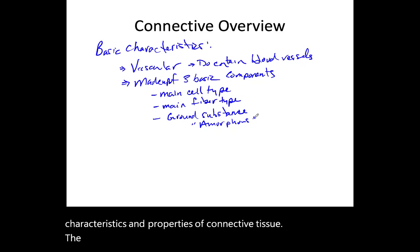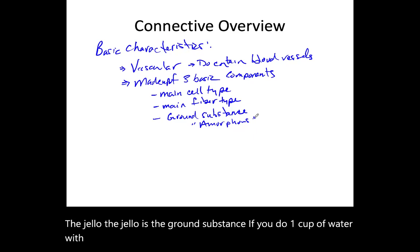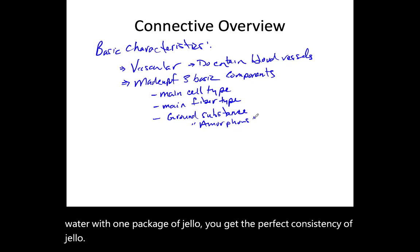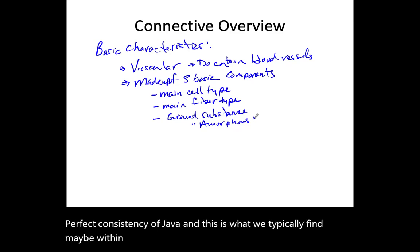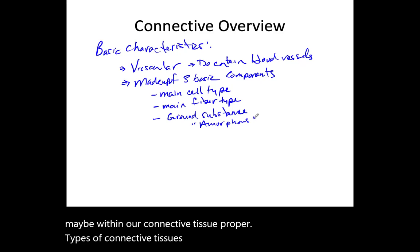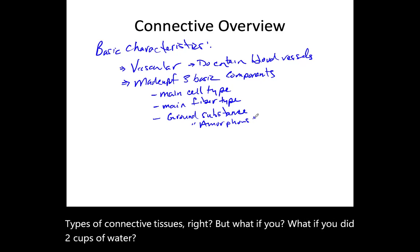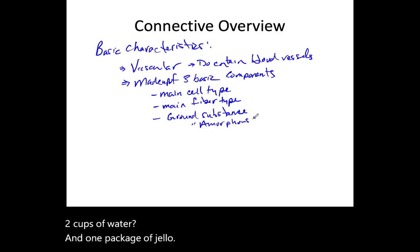The jello is the ground substance. If you do one cup of water with one package of jello, you get the perfect consistency — this is what we typically find in connective tissue proper. But if you did two cups of water to one package of jello, the jello is going to be very runny, like what we see with plasma.